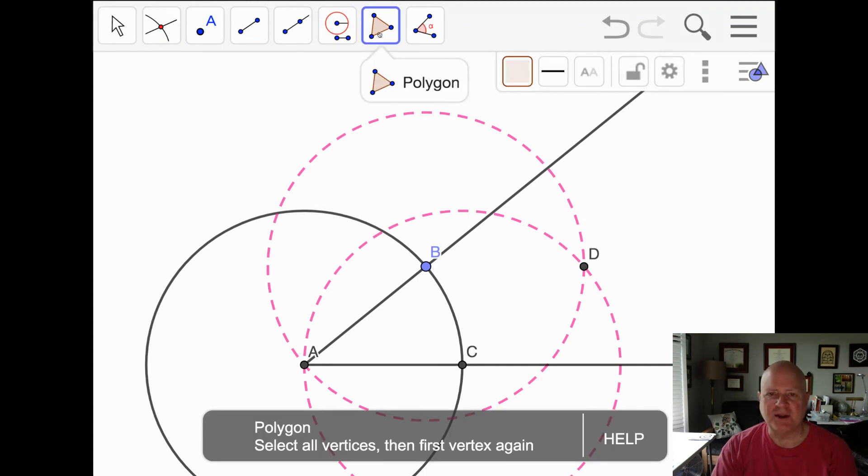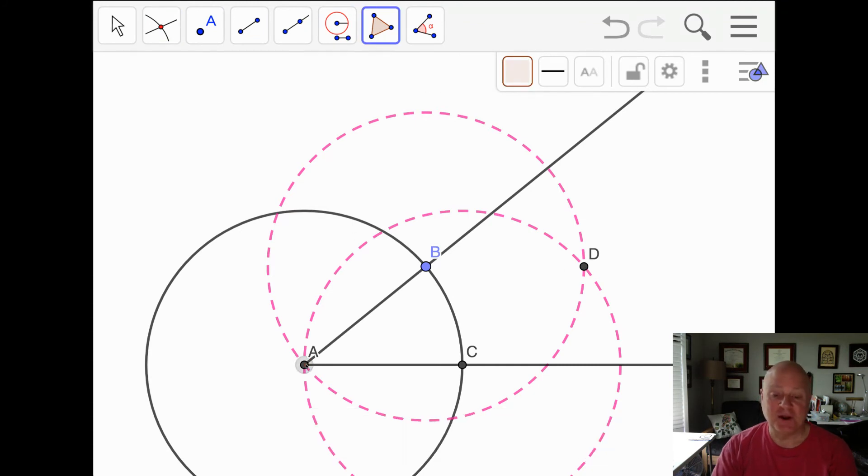And we'll construct our polygon using our polygon tool, our quadrilateral A, B, D, C. Notice if you did A, B, C, D, it would not be the same polygon. You have to go clockwise or counterclockwise. You start at a point and work your way around.